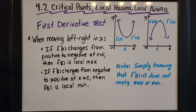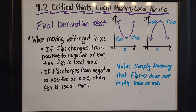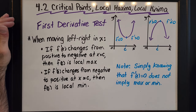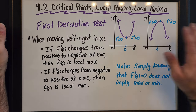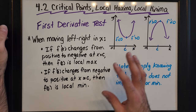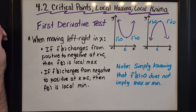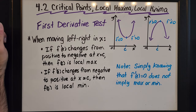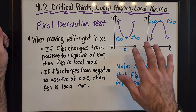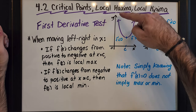Let's move on to 4.2: critical points, local max, and local minima. We're going to use something called the first derivative test to find out whether something is a local max or a local min. In 4.1 we figured out how to find maxes and mins, but now we're going to use the first derivative test to avoid certain scenarios that might trick us using only 4.1 info.